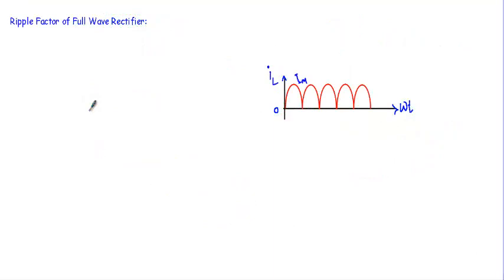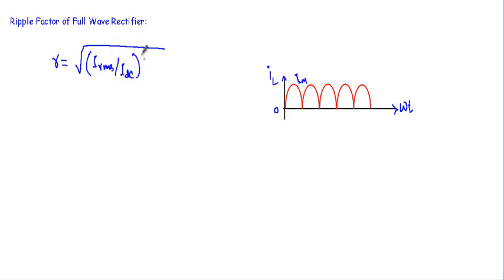Now let me show you the ripple factor of a full wave rectifier circuit. We calculate the ripple factor gamma equal to root over (IRMS/IDC) whole square minus 1. This is the output or load current waveform of the full wave rectifier circuit. The value of IRMS will be equal to IM divided by root 2.